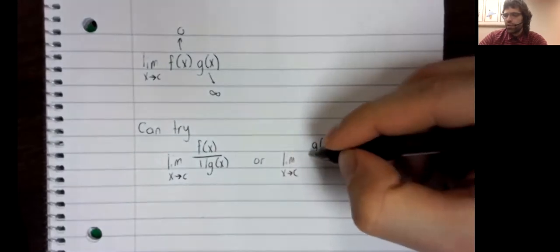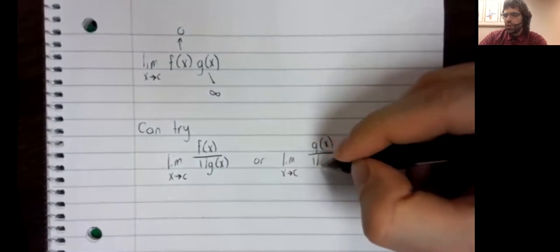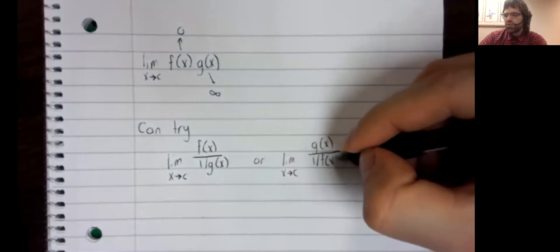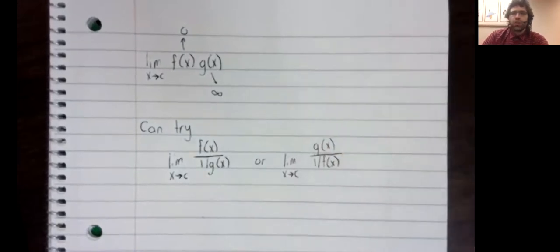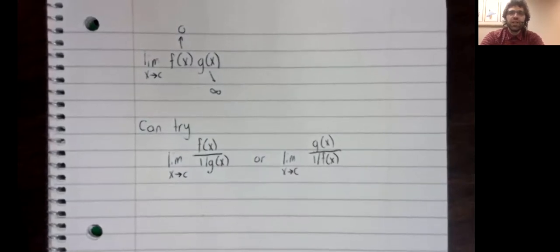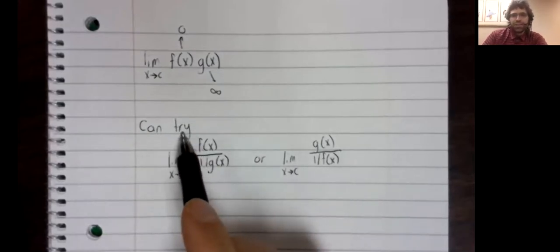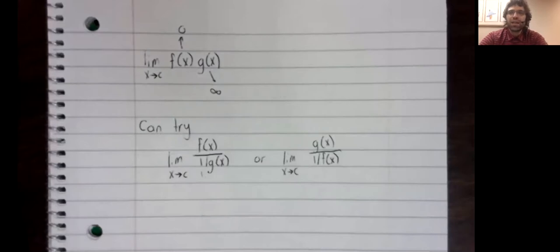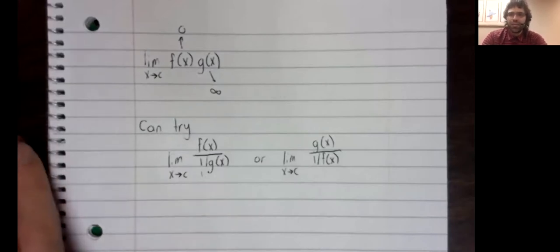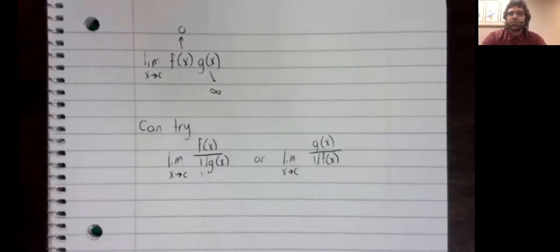And one of these quotients is going to be zero over zero, and the other is going to be infinity over infinity. So they're both indeterminate forms, and we can try to use L'Hopital's rule to find them. I wouldn't say this trick has the best hit rate, but let's do an example where it does work.